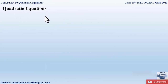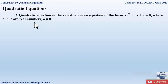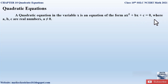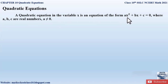First of all, let us see what are quadratic equations. A quadratic equation in the variable x is an equation of the form ax² + bx + c = 0, where a, b, c are real numbers and a — that is the coefficient of x² — is not equal to 0. It is an equation whose highest degree is 2.